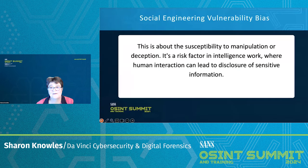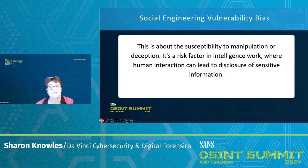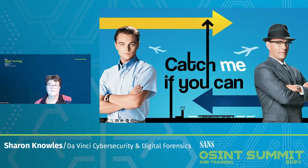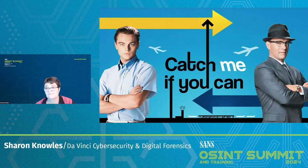Social engineering vulnerability bias: this is about susceptibility to manipulation or deception — a risk factor in intelligence work where human interaction can lead to disclosure of sensitive information. An investigator might receive a seemingly legitimate request for information that is actually a social engineering attempt. Even when you're asked to take on a case, you have to do your due diligence and look at the person or organization from whom you're receiving the case. If they fail to verify the source or intent, they could inadvertently leak confidential information. The movie here is Catch Me If You Can — Frank Abagnale Jr. exploits social engineering vulnerabilities to perform cons, showing how biases and trust can be manipulated.